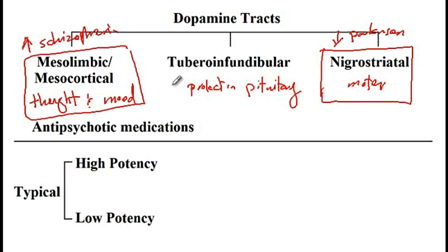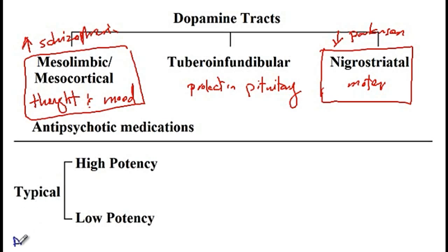In this video, I would like to strictly focus on antipsychotic medications, the effects of which are mediated by decreasing dopamine levels in the mesolimbic or mesocortical dopamine tracts. There are two different types of antipsychotic medications: typical and atypical.